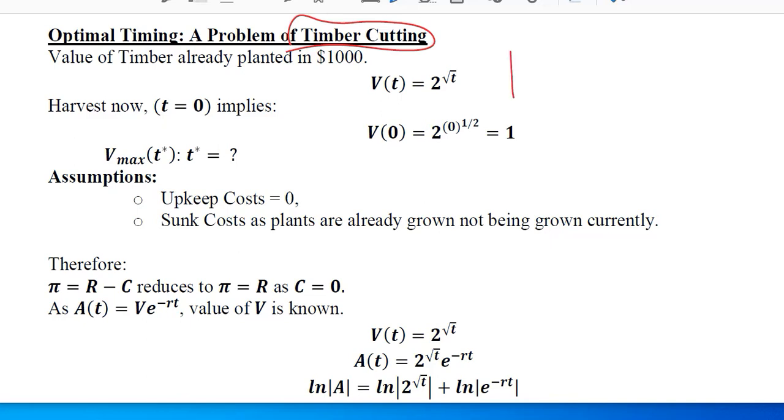We have understood it in the previous example. You can refer back to it, in which we found the maximized value of wine - that was the present value of wine. So let's start with this economic application.